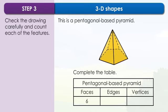An edge is where two faces meet. The edges appear as solid or dotted lines in the drawing. There are five edges around the pentagon on the base and five edges meeting at the top. There are ten edges altogether.